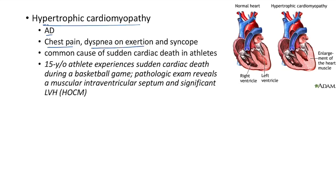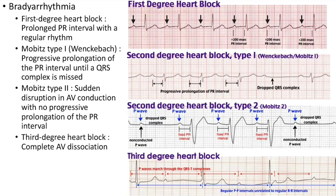Hypertrophic cardiomyopathy: mode of inheritance is autosomal dominant. Clinical features include chest pain, dyspnea on exertion, and syncope. It is a common cause of sudden cardiac death in athletes. Clinical case: 15-year-old athlete experiences sudden cardiac death during a basketball game. Pathologic exam reveals a muscular interventricular septum and significant left ventricular hypertrophy — a classical case of hypertrophic obstructive cardiomyopathy.